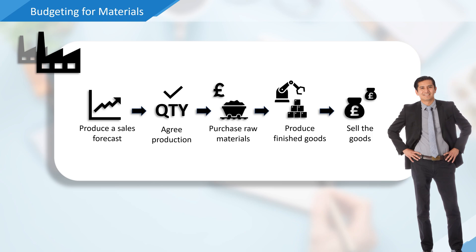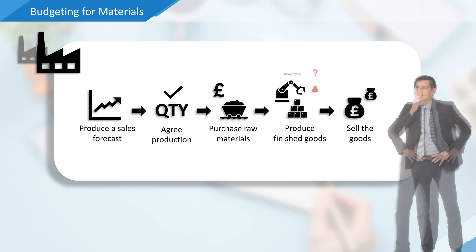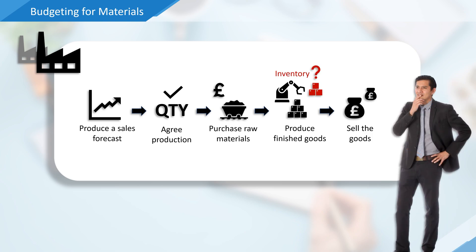For example, what if the business already has a stock of finished goods in its inventory, or plans to keep some in reserve for the beginning of the next period? Or what if a percentage of finished goods is anticipated to be rejected after production? What if it also has a stock of raw materials already in inventory, or plans to keep some in reserve for future periods? Or what if a certain amount of raw material is expected to be wasted during production?